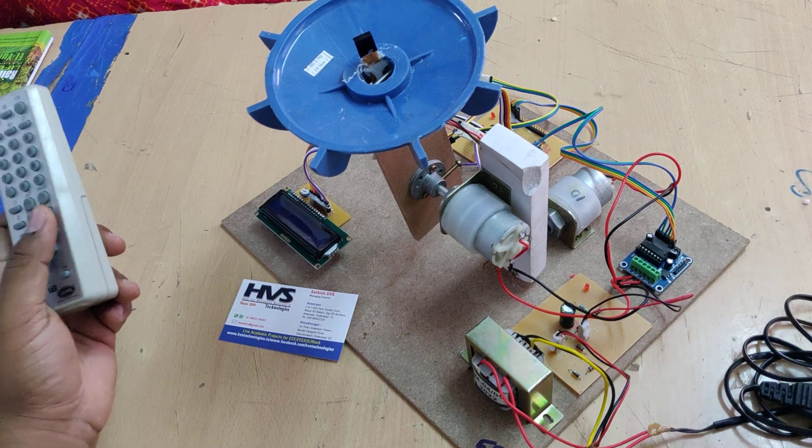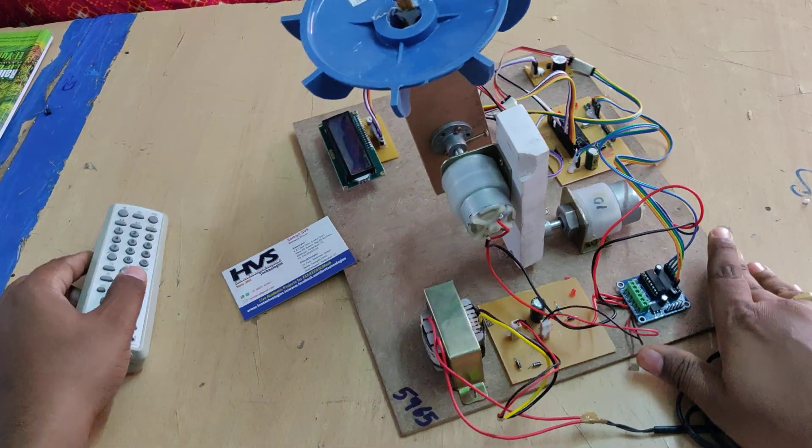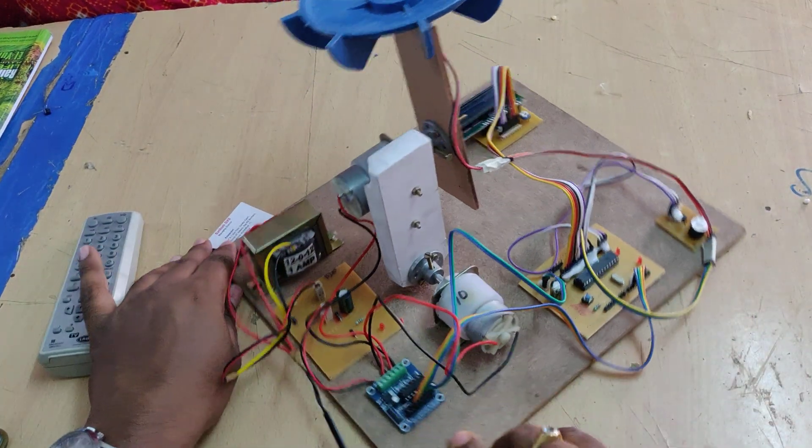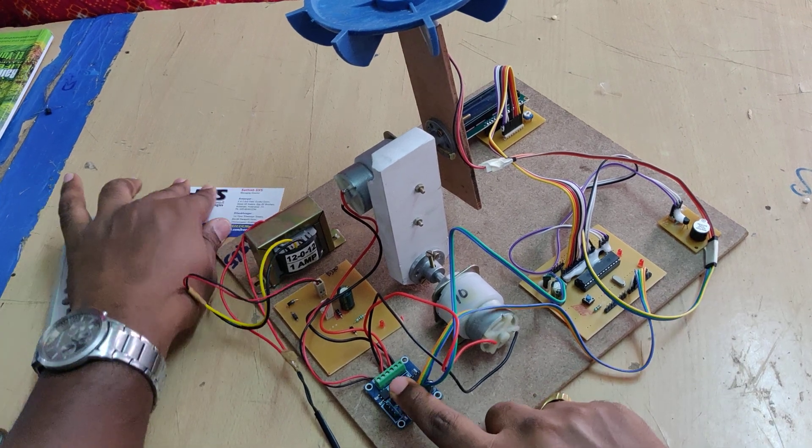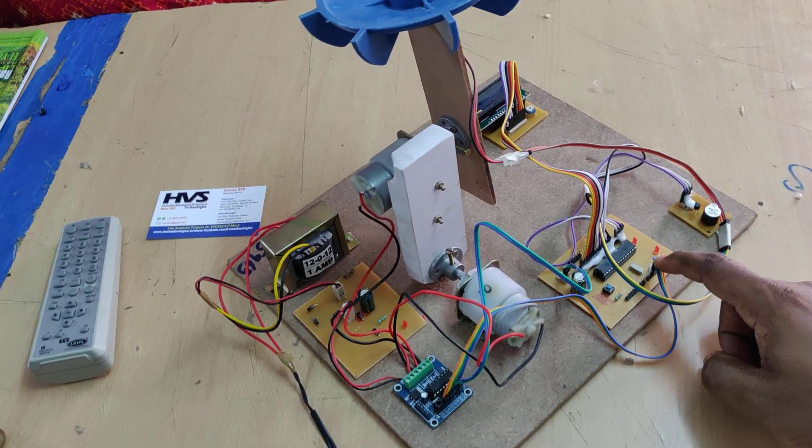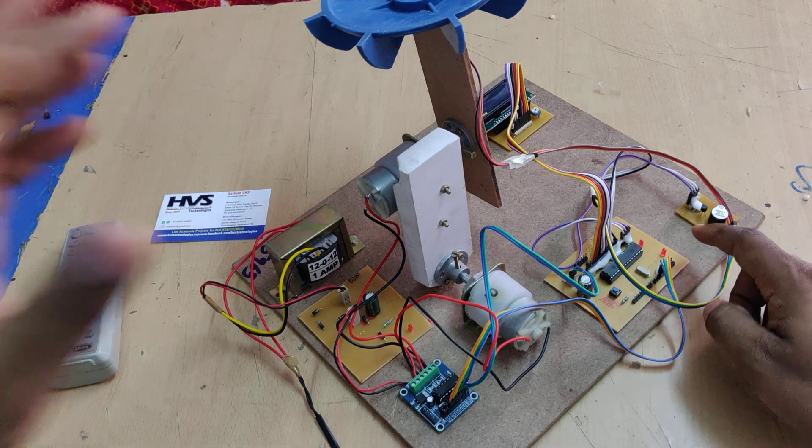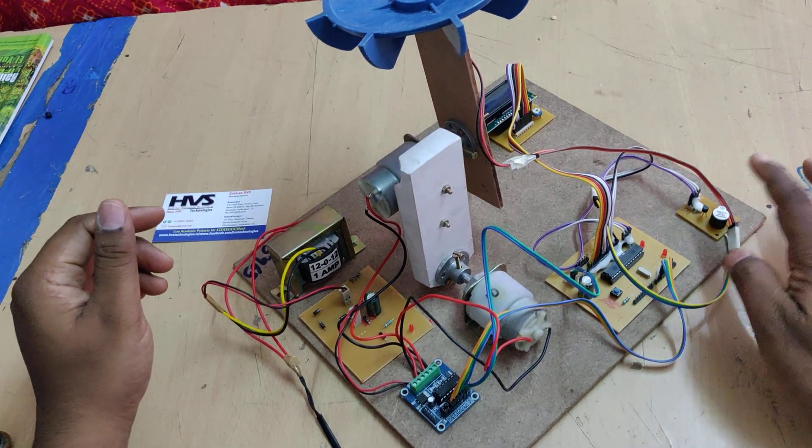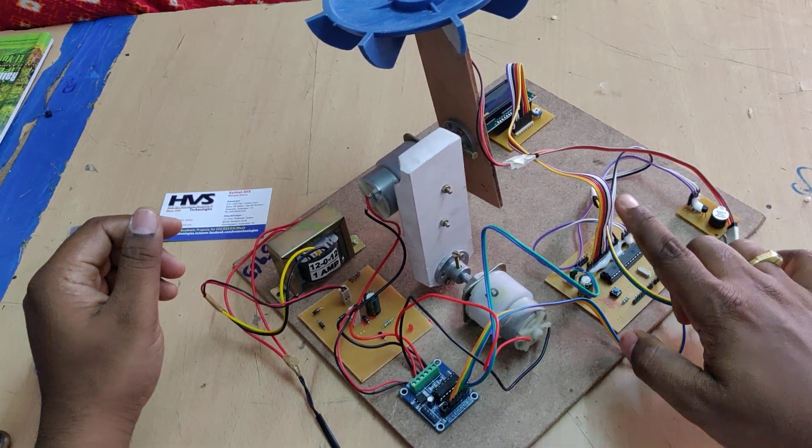Coming to the interfacing connections, we have interfaced the L293D motor driver at pins C0 to C3, B0 for the IR receiver module, buzzer at C4 pin, and LCD at pins B2 to B7.